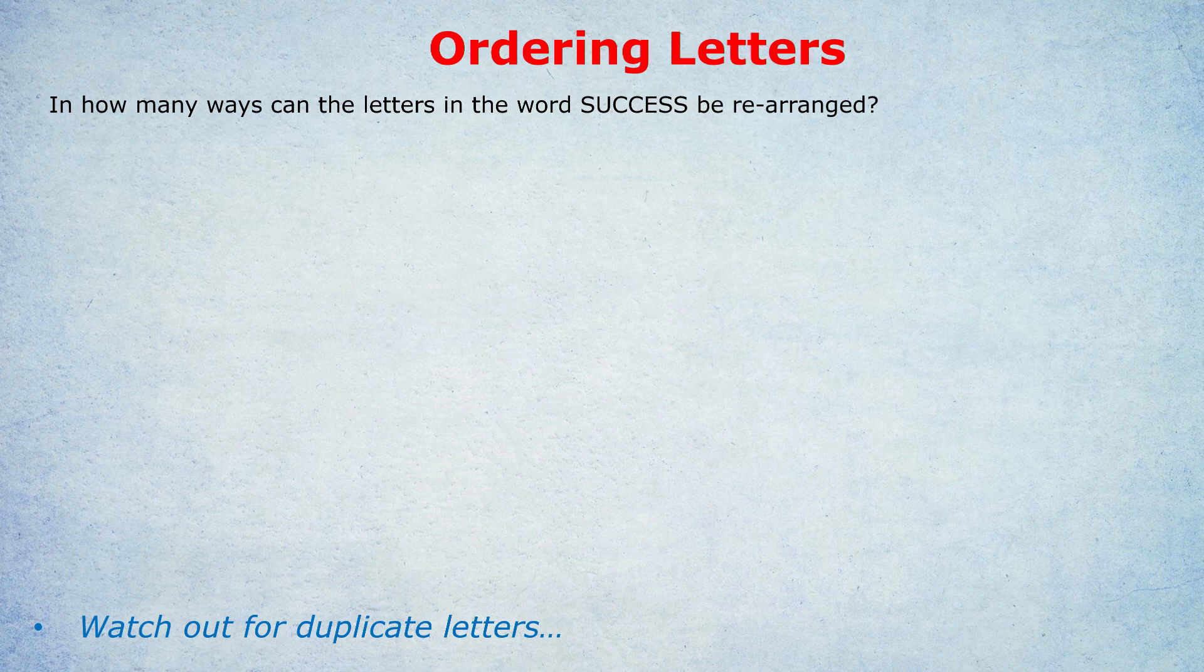SUCCESS has seven letters, that's seven factorial, but if you notice there are three S's and two C's and so many of these seven factorial arrangements are actually duplicates of one another. Take the basic arrangement SUCCESS spelt in that way. If you flipped one of the S's with one of the other S's, you'd still end up with the word SUCCESS even though seven factorial would count that as a different example. And so what do we do?